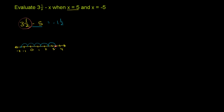Another way to think about it — involving the same idea of stepping 5 to the left but from a slightly different angle — is that 3½ minus 5 can be rewritten as 3½ plus negative 5, because subtracting anything is the same thing as adding the opposite of that number. This can be more useful because you can visualize what each number looks like on the number line.